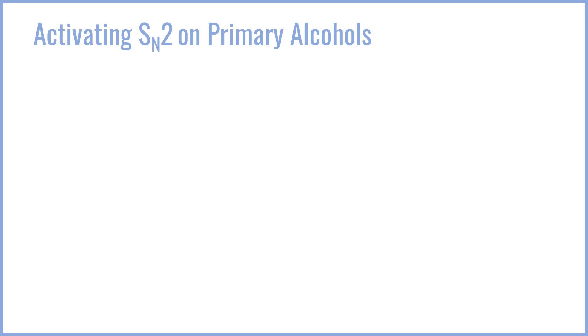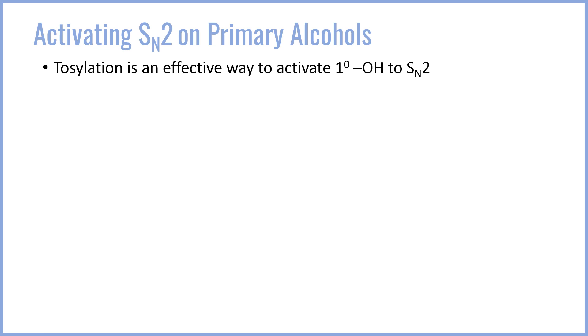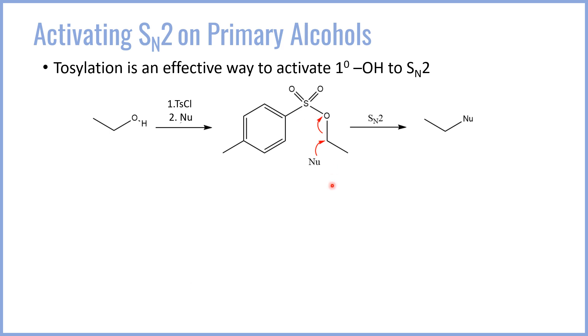Activating primary alcohols is a little different because primary alcohols can never undergo SN1 unless they are resonance stabilized, since the resulting primary carbocation intermediate is extremely unstable. As a result, SN2 is the primary pathway for primary alcohols. Tosylation is one very effective way to activate primary OHs to SN2. For example, treating ethanol with tosyl chloride gives the ethanol tosylate. The nucleophile is then provided as a second discrete step to substitute the tosylate group via SN2. We are not mixing tosyl chloride and the nucleophile together — we first tosylate, then conduct the SN2 substitution.